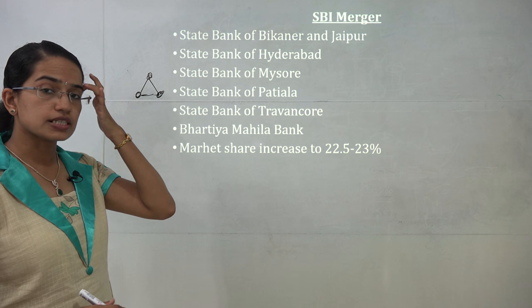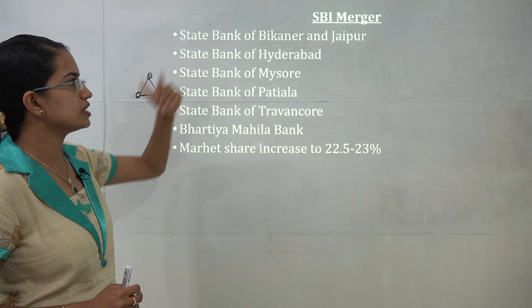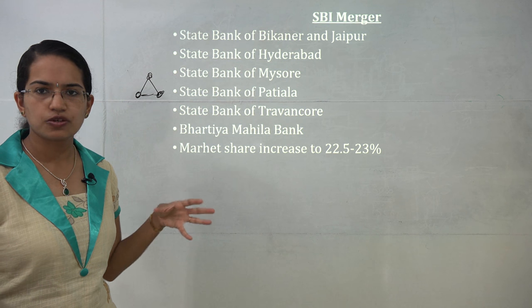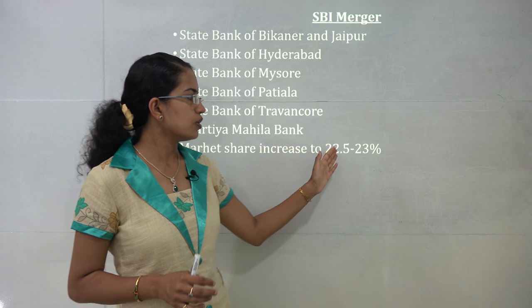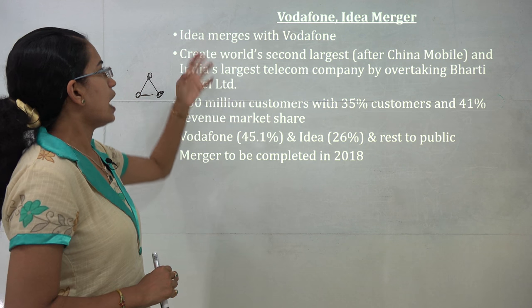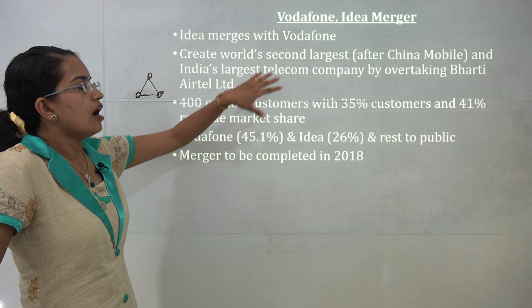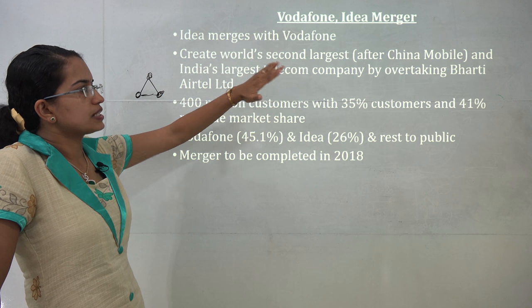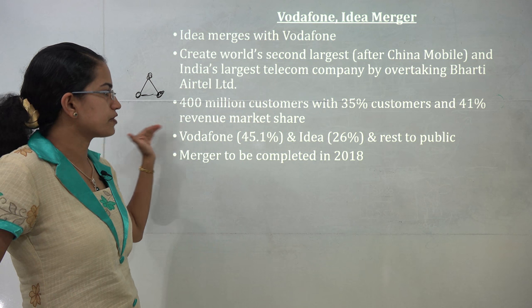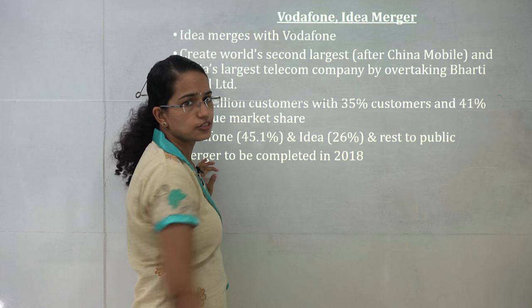SBI merger: 5 state banks and Bharti Mahila Bank have been merged with SBI, increasing its market share to nearly 23%. Another important merger: Vodafone and Idea have merged under the Vodafone brand, creating the world's second largest telecom company by overtaking Bharti Airtel — second only to China Mobile. It has 400 million customers with 35% subscriber share and 41% revenue market share. Vodafone holds 41% of shares, Idea 26%, and the rest is with the public. This merger is expected to be completed by 2018.